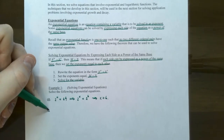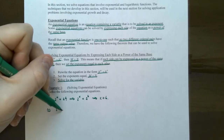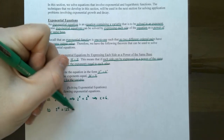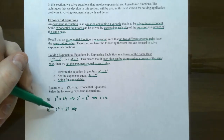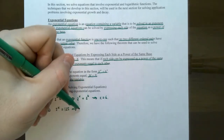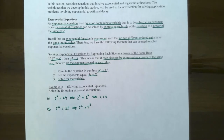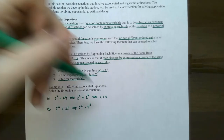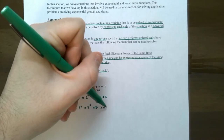Number two: five to the x power equals 125. This works similarly. The left side is base five, and 125 can also be rewritten as base five — specifically five cubed, five to the third power. Since the bases are the same, the exponents must be equal, so x equals three.